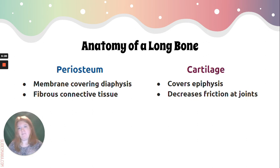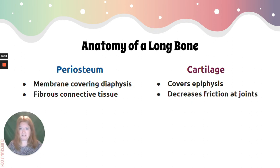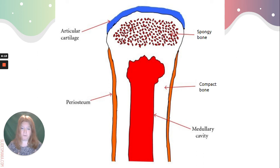The periosteum is a membrane that covers the diaphysis. It's made of fibrous connective tissue and has blood supply and nerves. Then we have cartilage — a connective tissue — that covers the epiphysis, the ends. When bone meets bone, because they're covered in cartilage, it decreases friction at joints. Because bones are living tissue, rubbing against each other creates a great deal of pain. You can see the blue cartilage, the spongy bone epiphysis, the compact bone continuing into the diaphysis, the periosteum covering the bone, and the medullary cavity, which contains the marrow.